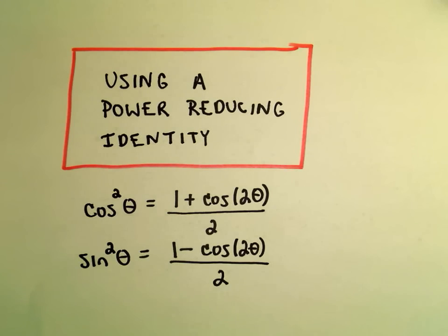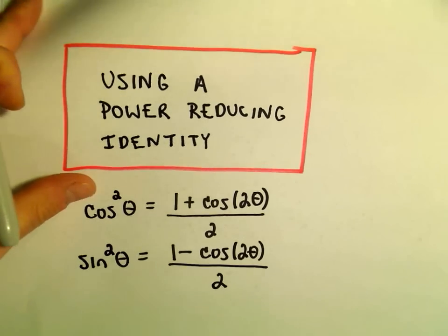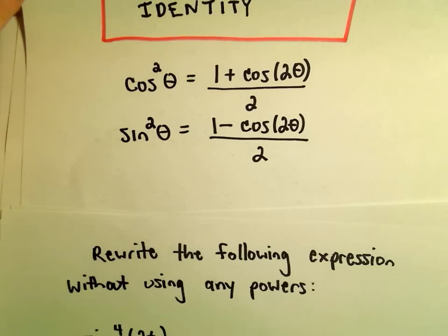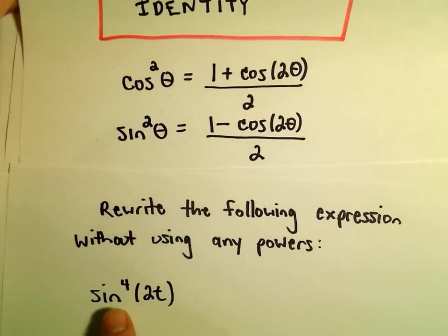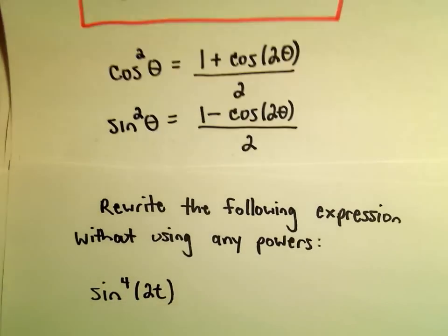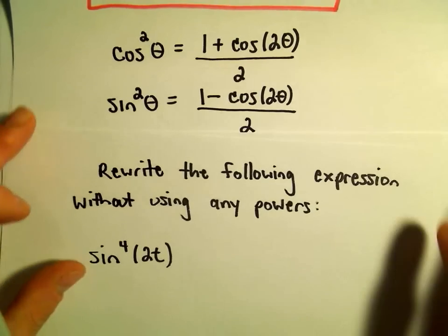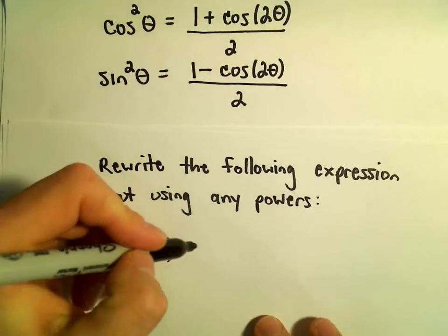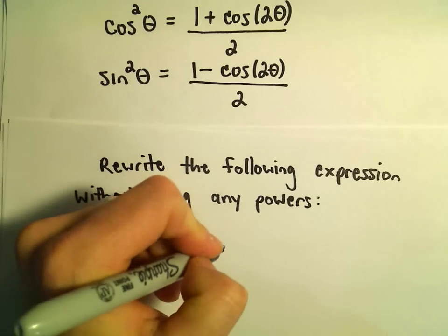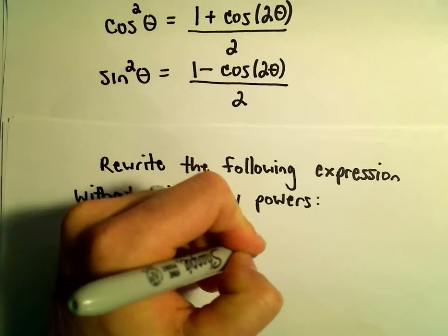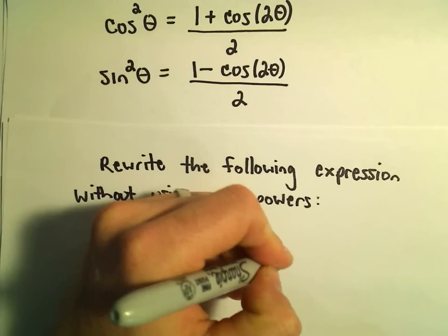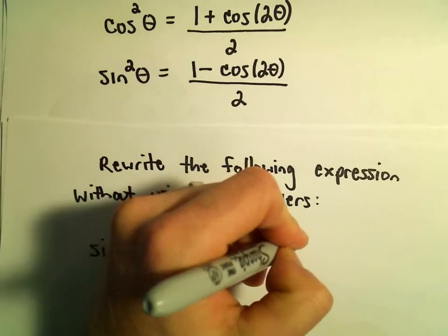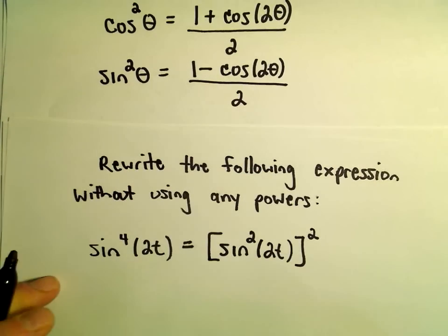What we're going to do is use the second identity, and we're going to rewrite the expression sine to the fourth of 2t. The first thing I'm going to do — because this identity involves sine squared — is rewrite sine to the fourth as sine squared of 2t, all of that squared. That'll still give me the fourth power.